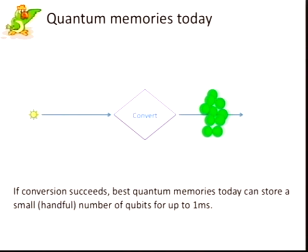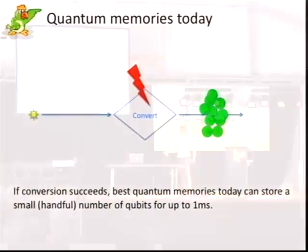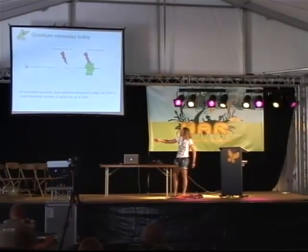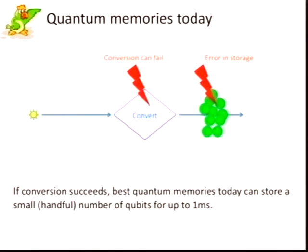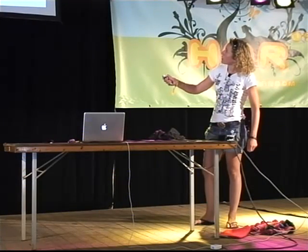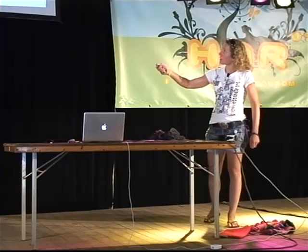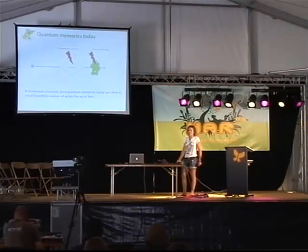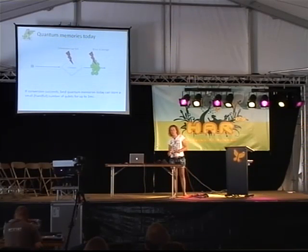Why is this assumption more realistic than classical storage? What is the state of the art of quantum memories today? There are two places where noise can occur. Normally, quantum bits will be encoded in some photon, and you want to store this over a long period of time. Generally you can convert it to something else — for example, some atomic ensemble — and already in this conversion something can go wrong. Even if you have managed to actually convert and store it, there can be errors in storage. The best memories available today can store a small handful of qubits, and assuming I've made this conversion, they can stay in storage for about a millisecond. So quantum storage is not very advanced yet, and we will actually make use of that.